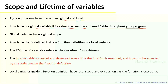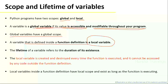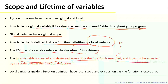A variable is global if it can be accessed and modified throughout the program — global variables have global scope. A variable that is defined inside a function definition is called local. The lifetime of a local variable exists within that block only. Local variables are created when we enter the block and destroyed when we exit from the block.